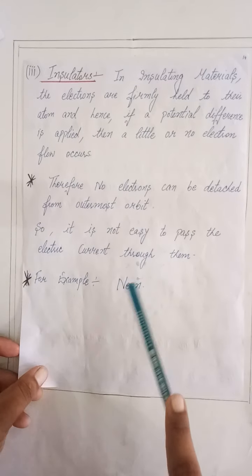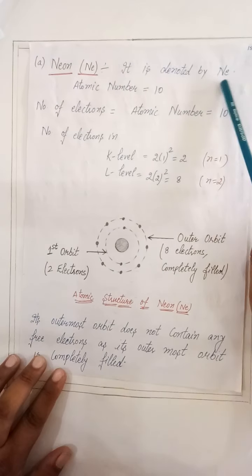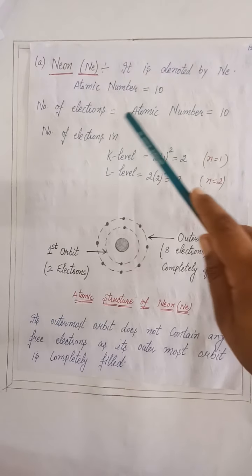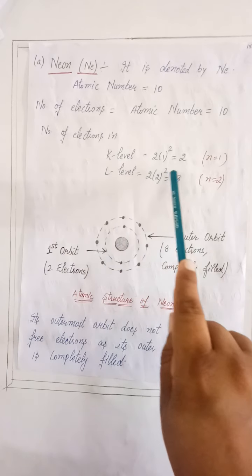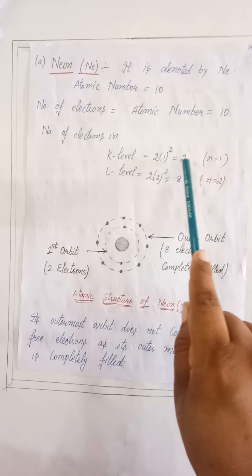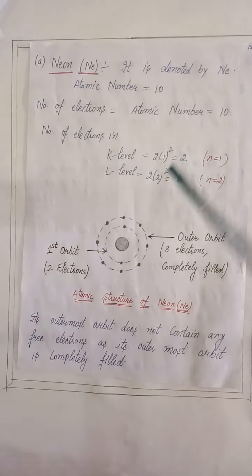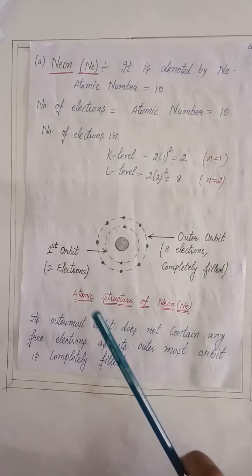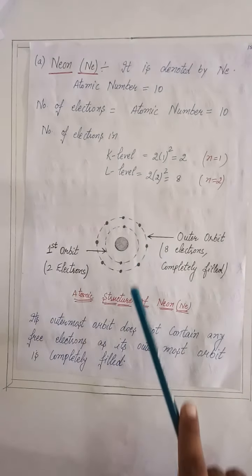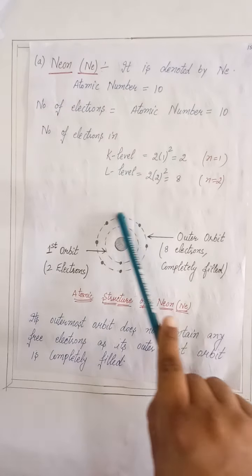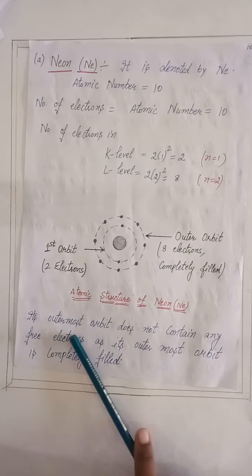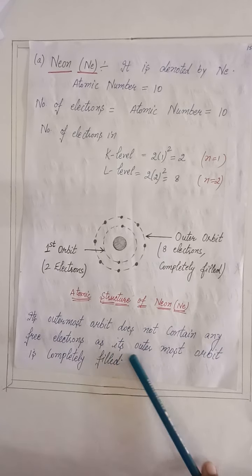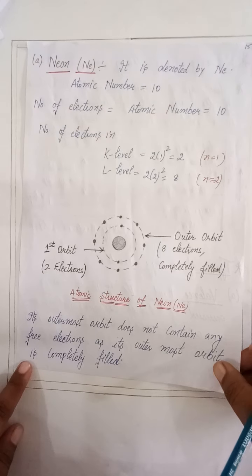We will take the example of neon for insulating materials. Neon is denoted by Ne, atomic number 10. Number of electrons equals 10. In K level: 2×1² = 2 (n=1). In L level: 2×2² = 8 (n=2). In the atomic structure of neon, the first orbit has 2 electrons and the outermost orbit has 8 electrons, which is completely filled. Its outermost orbit does not contain any free electrons as it is completely filled. Thank you very much.